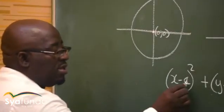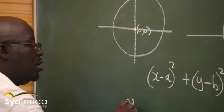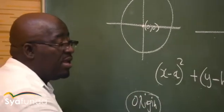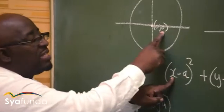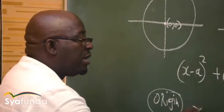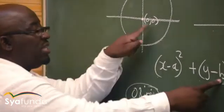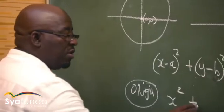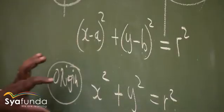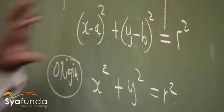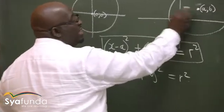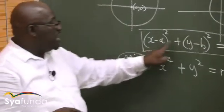If the center is at the origin, we push in the values of a and b. Since a is zero and b is zero, the equation becomes x squared plus y squared equals r squared. That's where this simplified formula comes from. With the center at the origin, it's x² + y² = r². With the center not at the origin, you push in the actual values of x and y to find a and b.